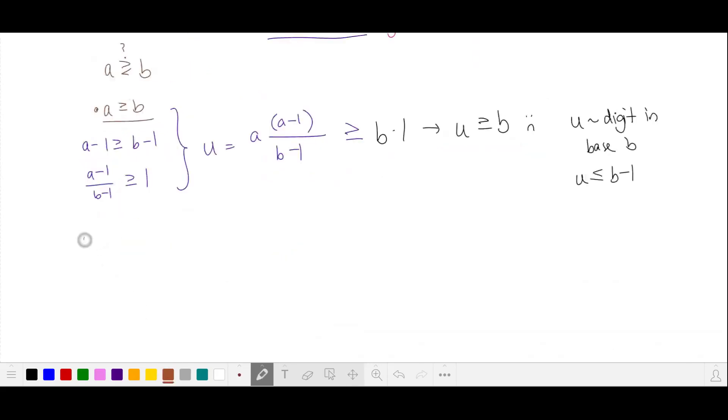Let's just check the other case where a is less than b. Subtracting 1, dividing by b minus 1, and substituting, and replacing each of these factors, replacing a with b, and this fraction with 1, which gives us u is less than b, which is consistent.